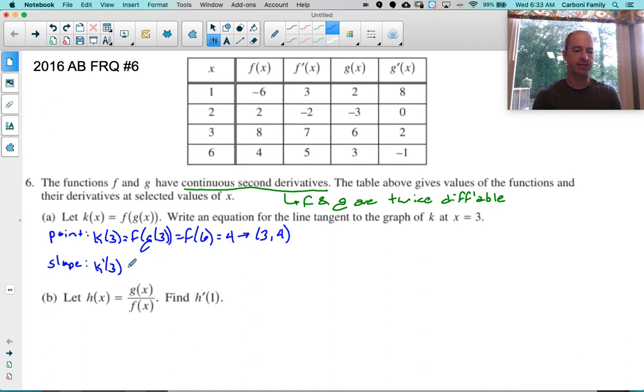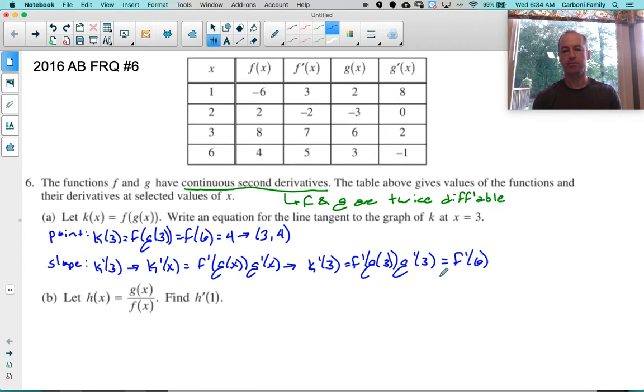My slope, I'm going to first have to find what k prime of X is. This would just be the definition of the chain rule: F prime of G of X times G prime of X. So K prime of 3 equals F prime of G of 3 times G prime of 3. G of 3 is 6, F prime of 6 is 5, G prime of 3 is 2. So 5 times 2 is 10. I finally have my slope.